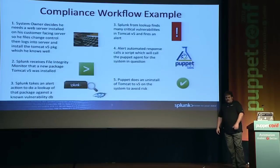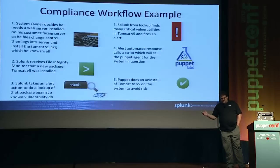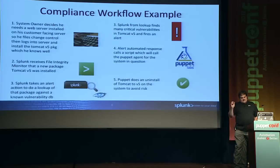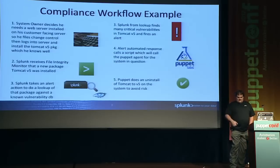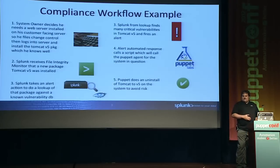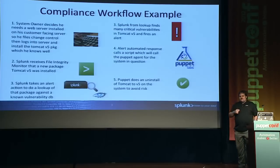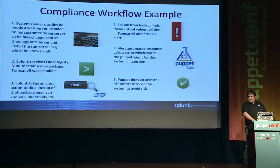Another real-life use case: a release manager logs into a box and installs Tomcat 5 because he knows and likes that version. Splunk receives a FIM alert, detects Tomcat 5 as an installed package via RPM lookup, checks against a vulnerability database in Cassandra, and finds the vulnerability list for Tomcat 5 is enormous — the cross-site scripting list alone has about 70 entries. An alert fires, Puppet uninstalls Tomcat V5 and forces an approved configuration.